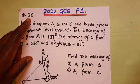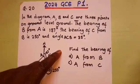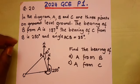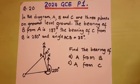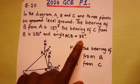This was question 20. In the diagram, A, B, and C are three points on level ground. The bearing of B from A is 137°, the bearing of C from B is 250°, and the angle ACB is 35°.